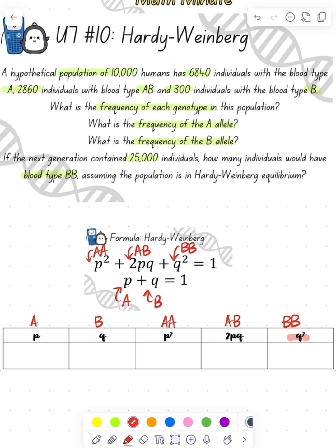So what we're going to do is we're going to take the 300 divided by the 10,000, and that's going to give us 0.03.